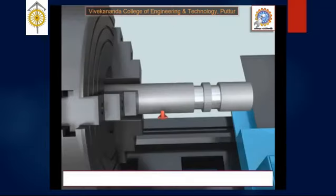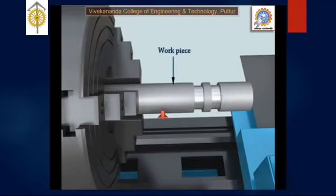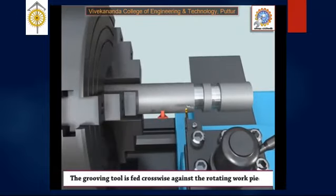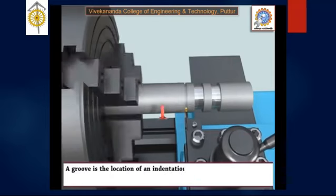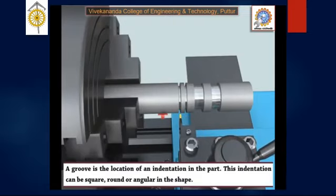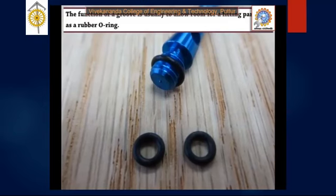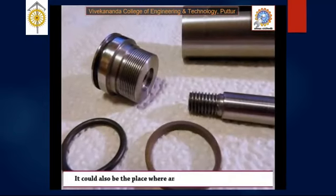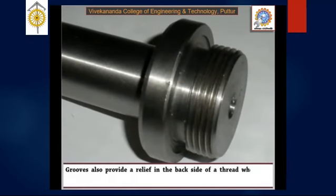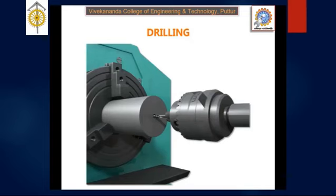Grooving is also known as recessing, undercutting, or necking. After facing and turning, change to the grooving tool, which imparts a groove on the cylindrical job. This is useful for placing washers or springs. Grooves also provide a relief at the back side of a thread where the thread terminates, and they provide a recess immediately after thread cutting.